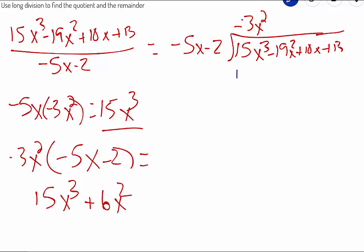And when we do that, we get a positive 15x cubed plus 6x squared. We are going to write that down underneath here, 15x cubed plus 6x squared, and we are going to subtract that.